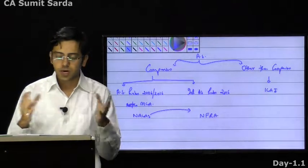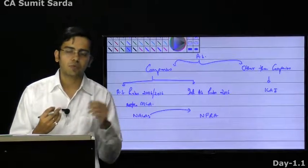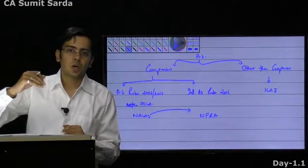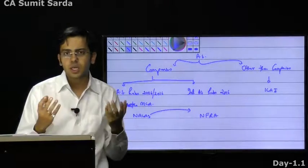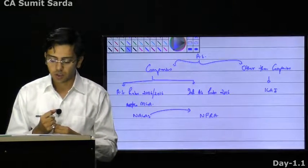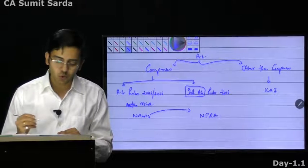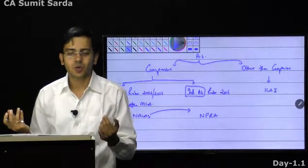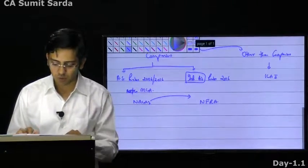So accounting standards are basically split into three parts: one is the 2006 rules for companies, second is the basic accounting standards for other than companies, and third is Indian Accounting Standards. Most students are worried about what Indian Accounting Standards talks about — don't worry, it is very easy. Just trust me and move ahead with the classes.